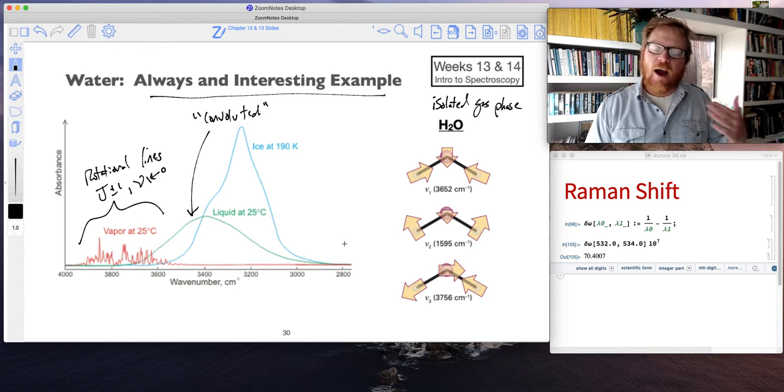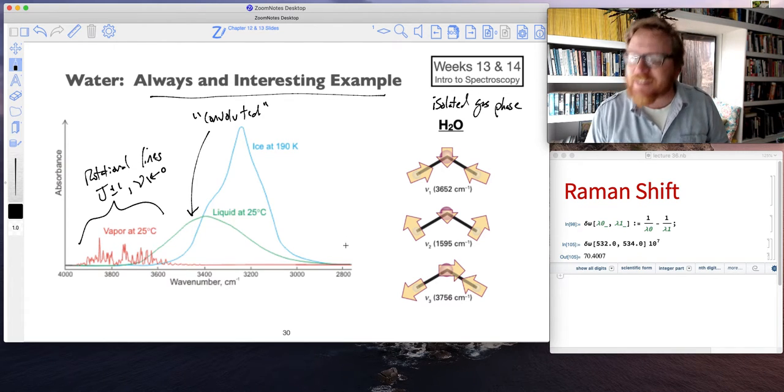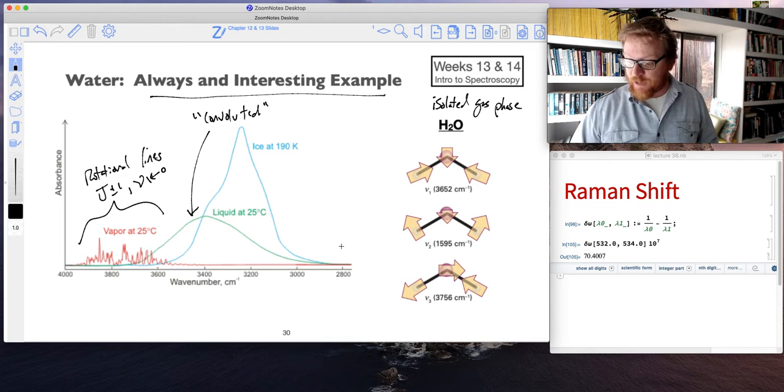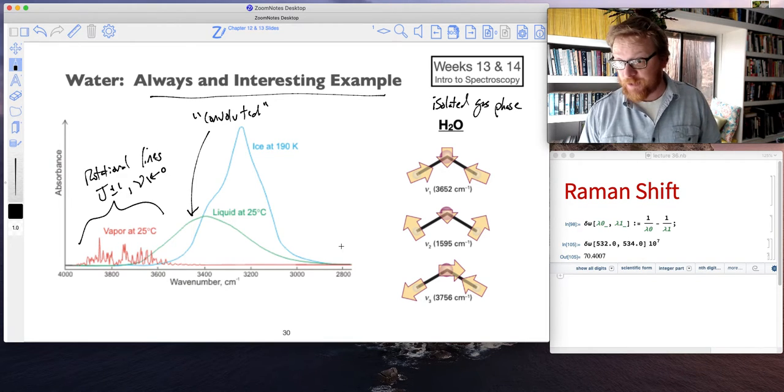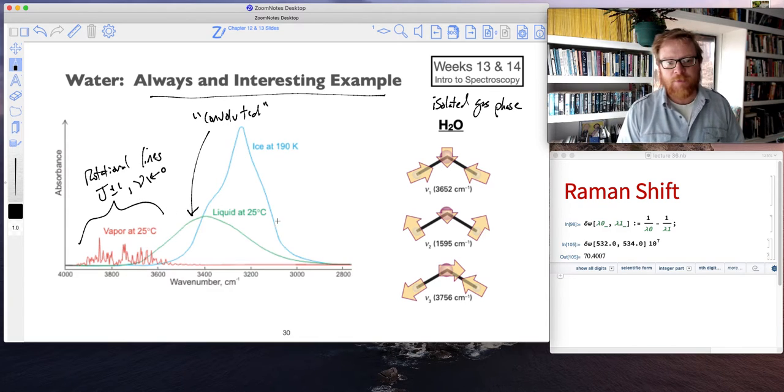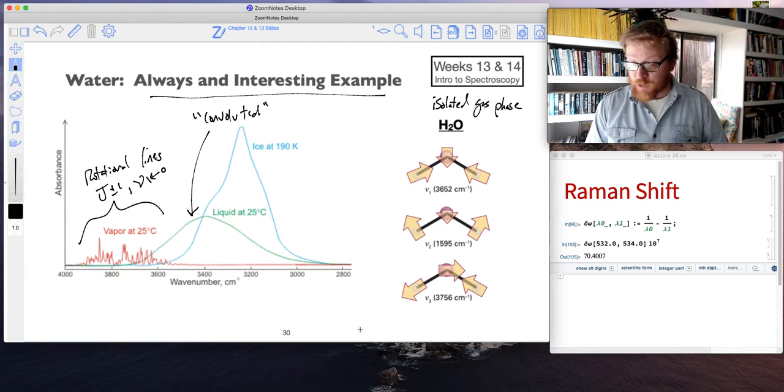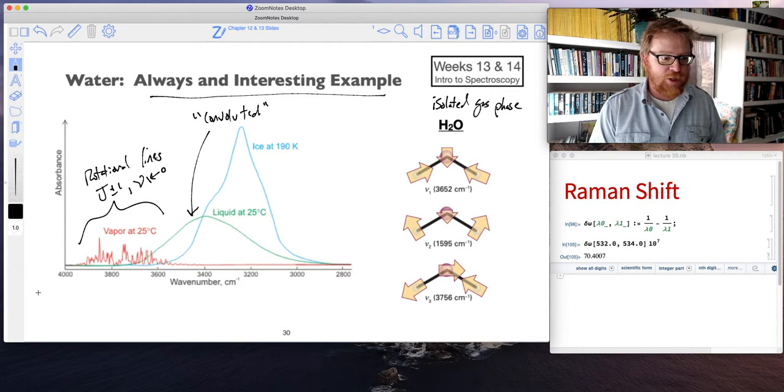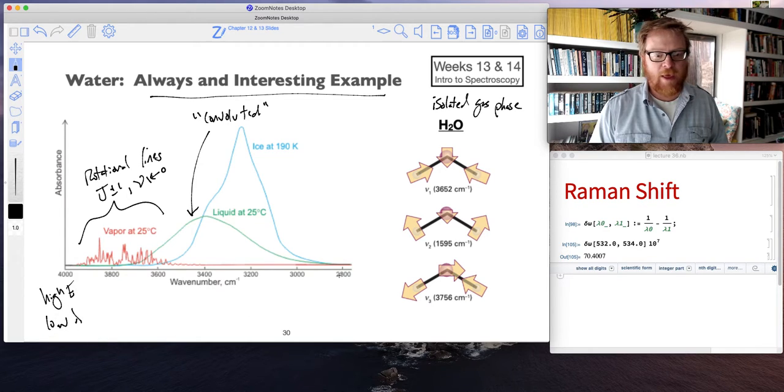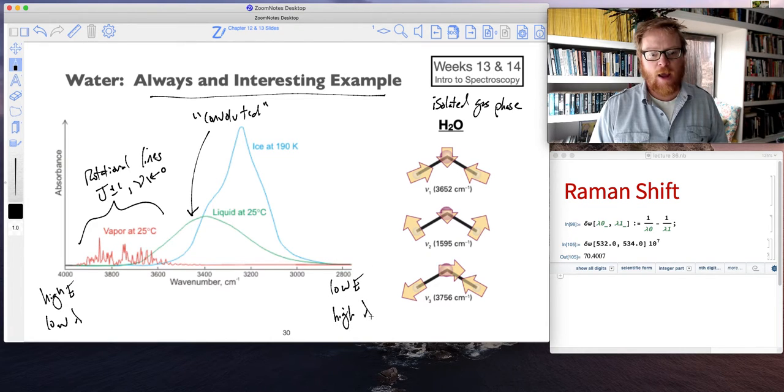An FTIR is a fantastic technique for working out intermolecular force details. Just by the simple observation of seeing how these phases shift to smaller energies. Remember, smaller wave number, smaller energy. High energy, low wavelength; low energy, high wavelength.